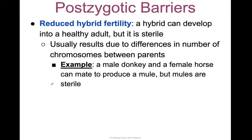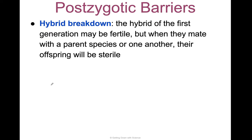A mule is a hybrid between a donkey and a horse, but mules are sterile — a mule and a mule cannot have babies. So that is reduced hybrid fertility. The genes of the original donkey and horse stop there — they cannot be passed down.